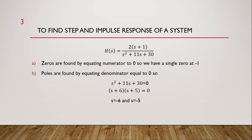To find zeros, we equate the numerator to zero. After equating the numerator to zero, we get s equal to minus one. So we have a single zero at s equal to minus one.